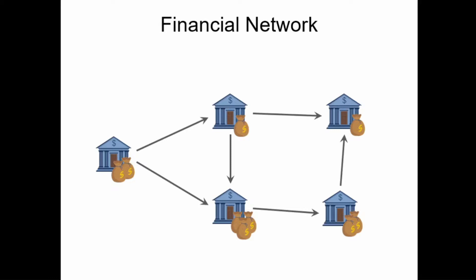If one of the banks goes bankrupt and cannot pay its liabilities, then other banks do not receive their money, so they also go bankrupt, and so on. It can cause a cascading effect through the whole network. Because of this, the network-based study of these financial systems has been rapidly gaining attention in the last few years.